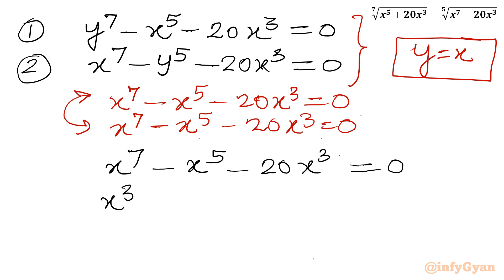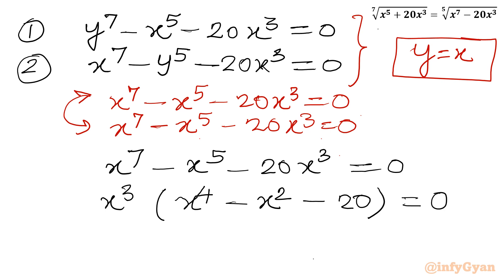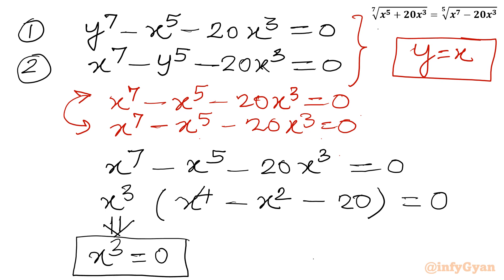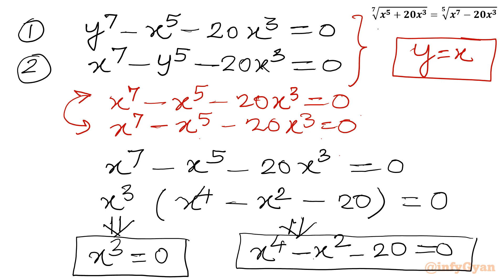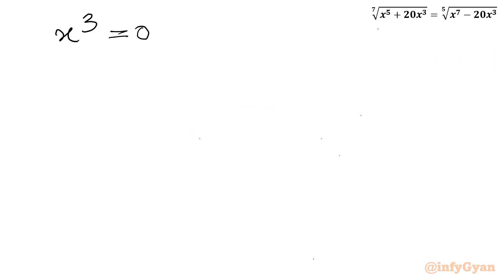x³ is a common factor, so I will write: x³ times (x⁴ minus x² minus 20) equal to 0. From here we get two cases. First: x³ equal to 0, which gives x equal to 0 with multiplicity 3. Second: x⁴ minus x² minus 20 equal to 0.